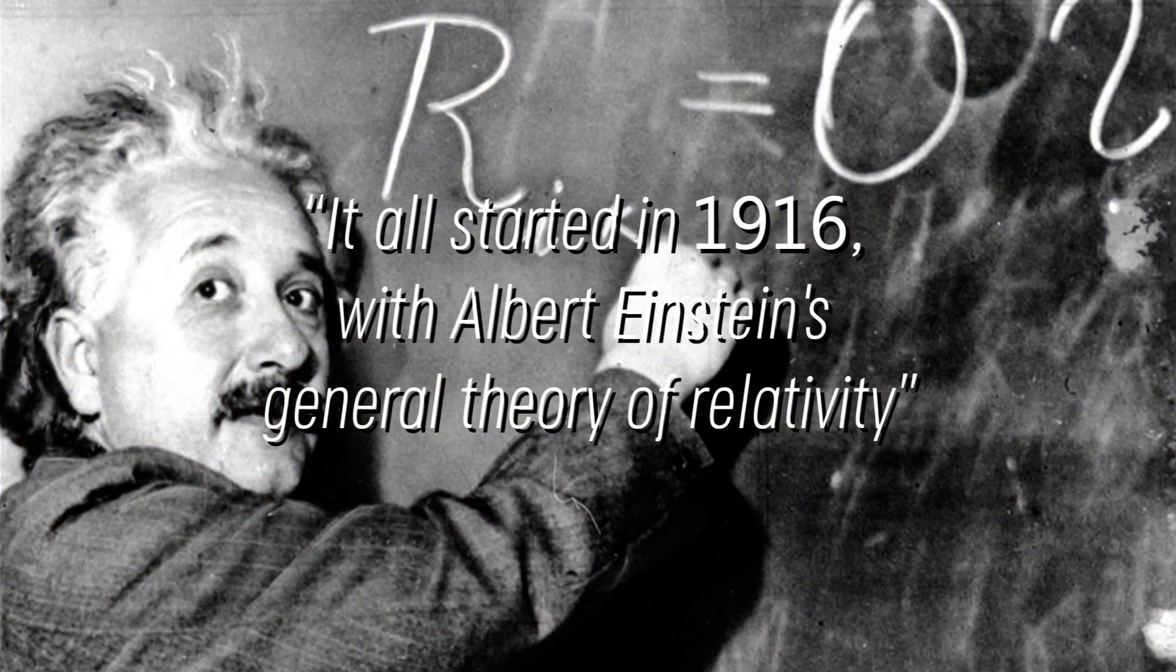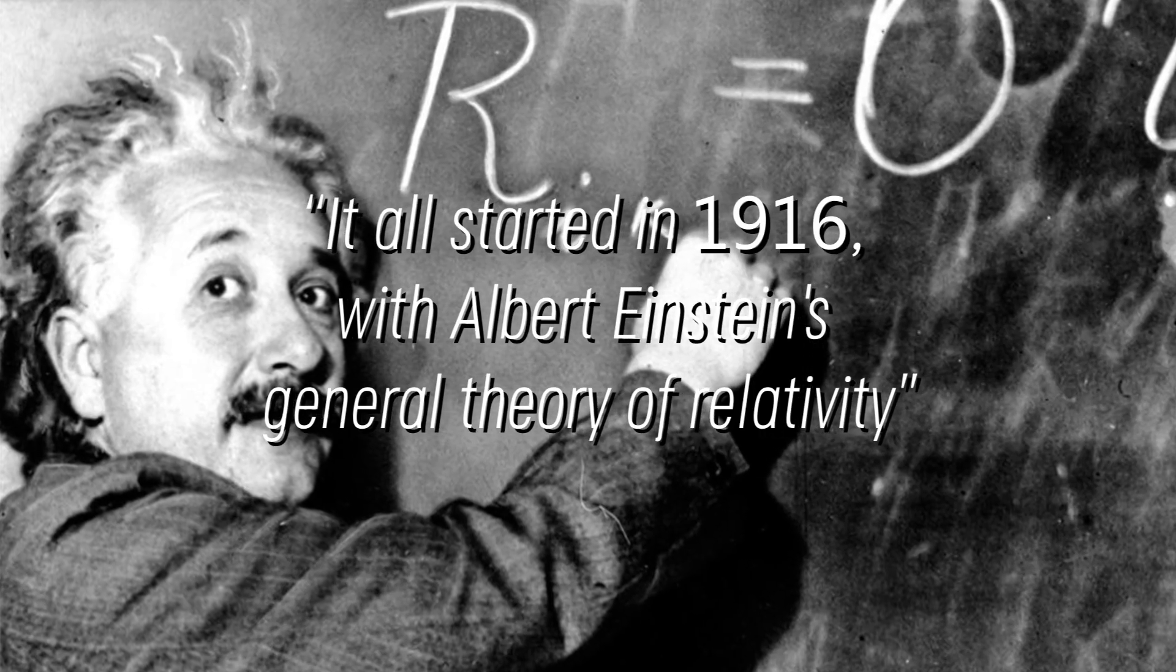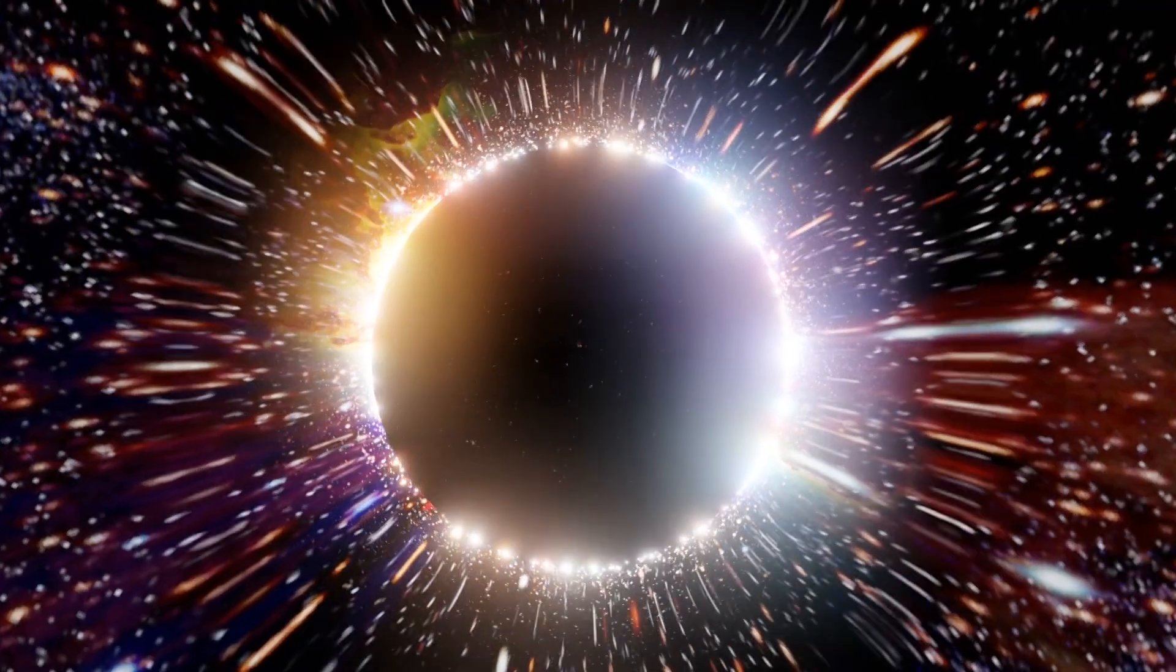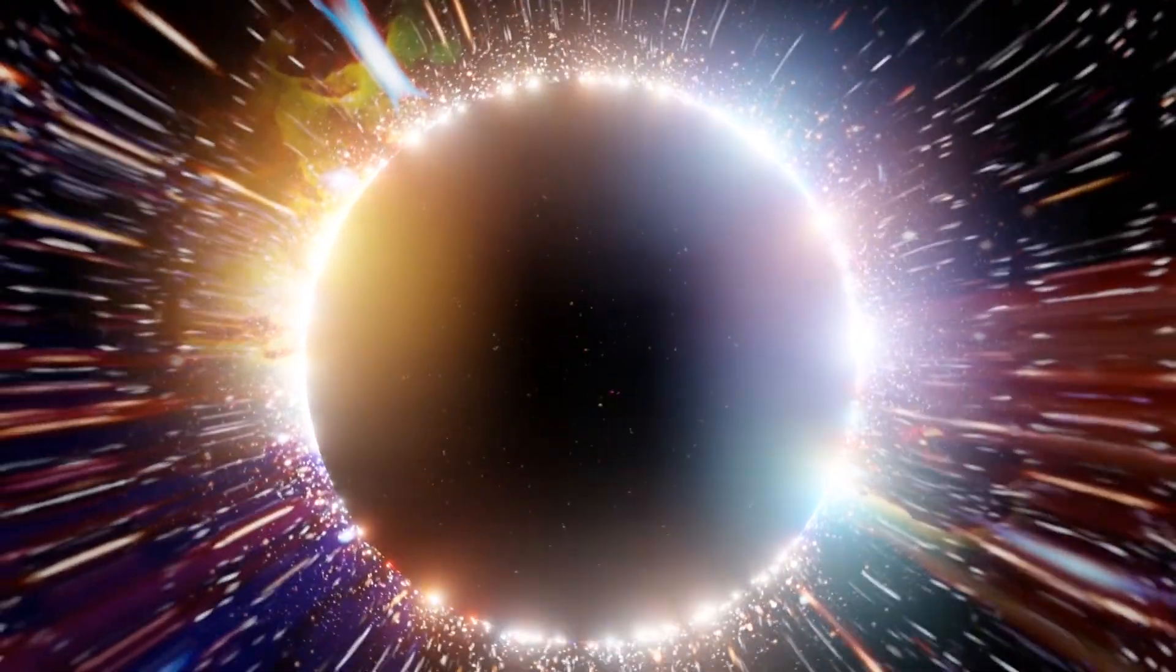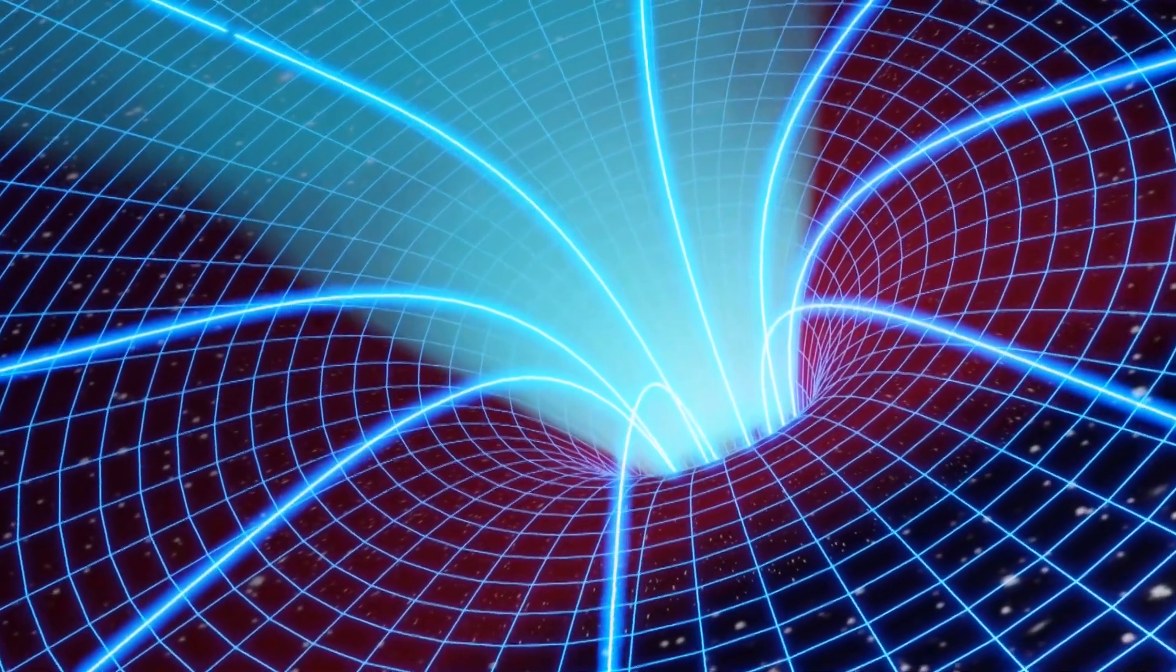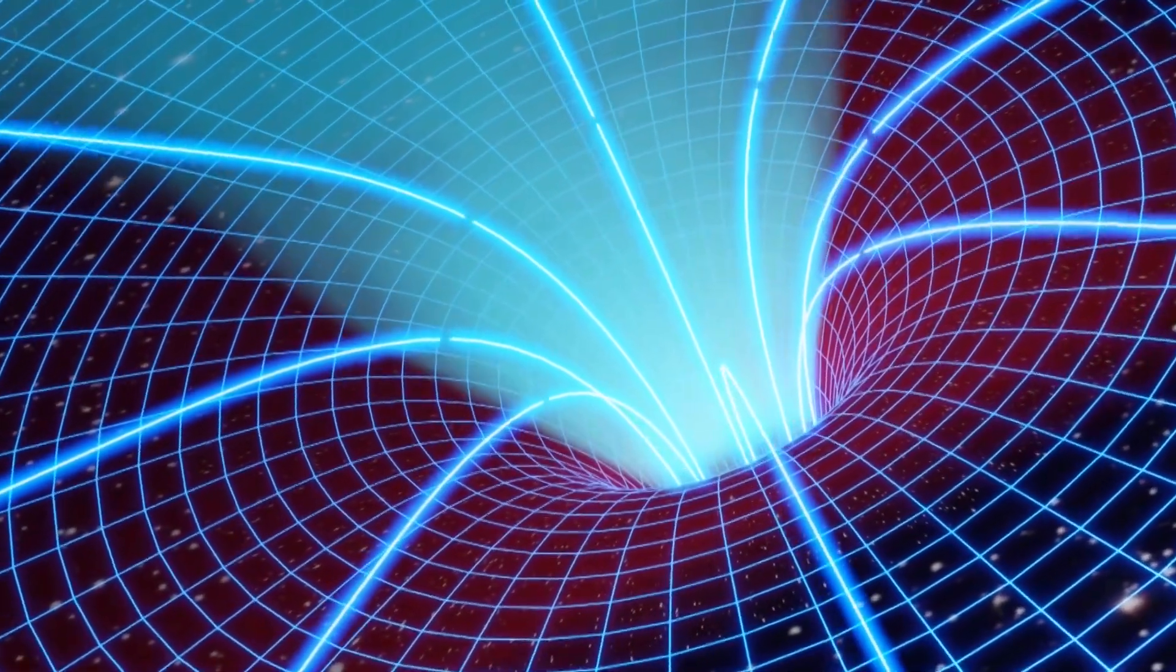It all started in 1916 with Albert Einstein's general theory of relativity, who was the first to predict the existence of these entities. Although the term black hole was officially coined 50 years later, some scientists already believed in Einstein's theory, while others dismissed it.